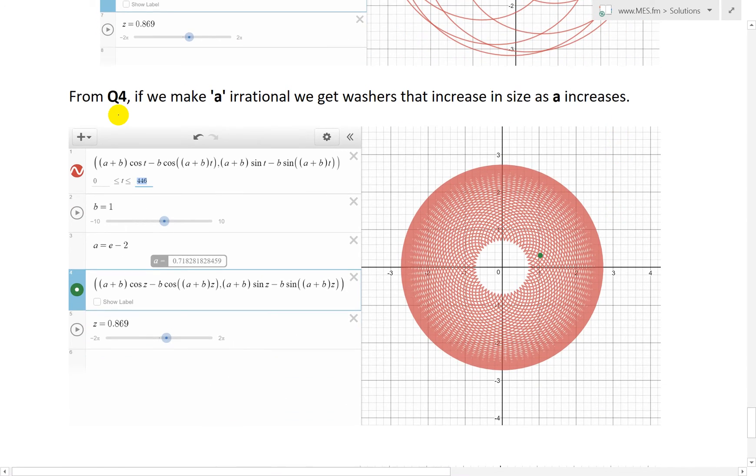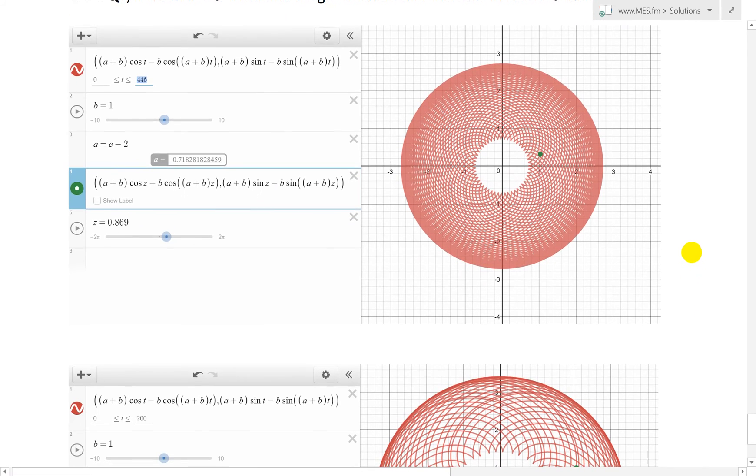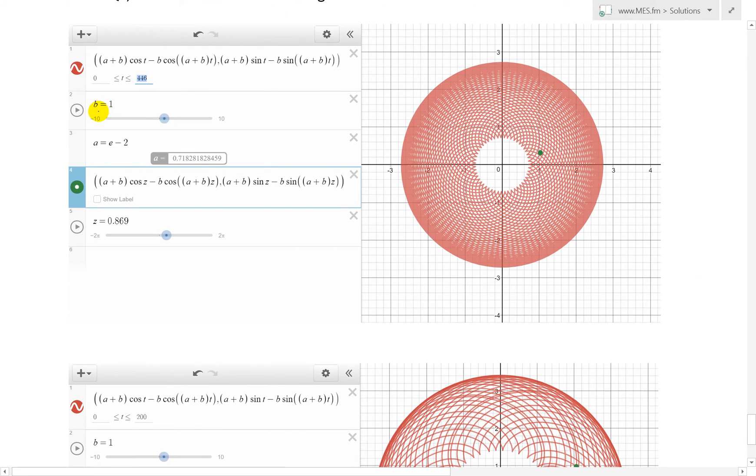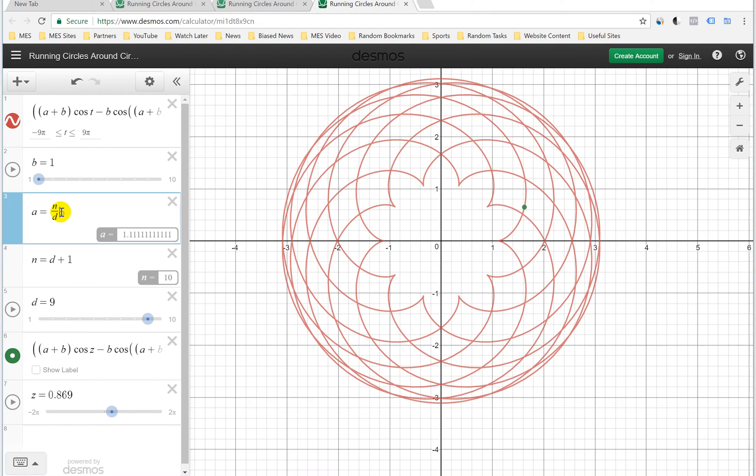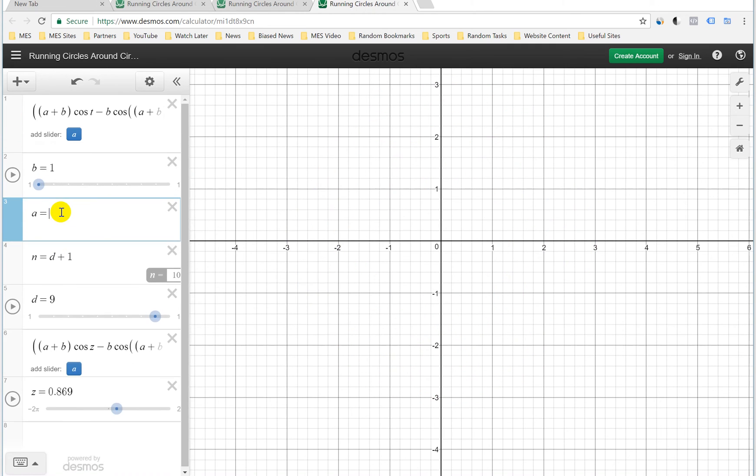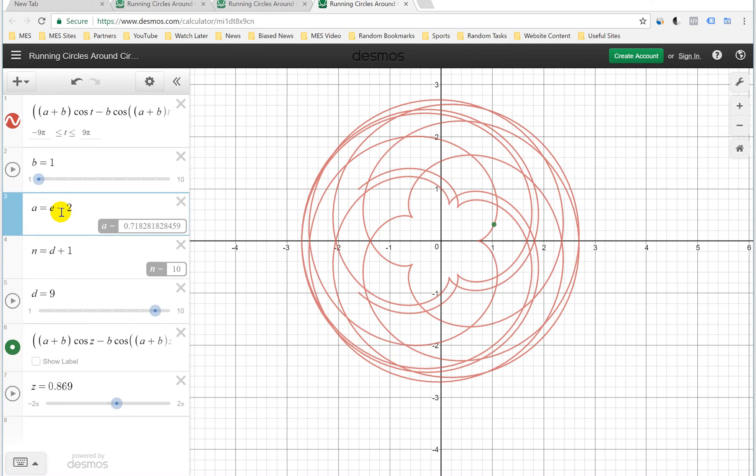And now from question 4, what we did was we made a irrational, and then what happens, we get washers that increase in size as a increases. So for here, what I've done is made b equals to 1. I made a equals to e minus 2. That's going to be an irrational number that there's no patterns in the decimal places. We get a shape like that, and we could play around with this. We can just go here, a equals to e minus 2. So we got a shape like this, and as you can see, because it's irrational, it never closes the form.